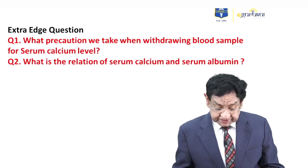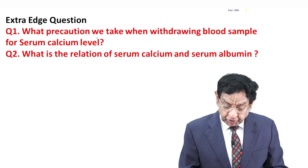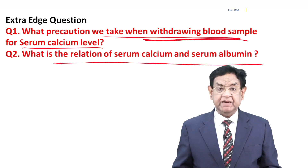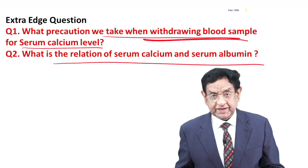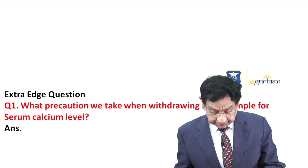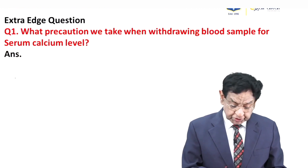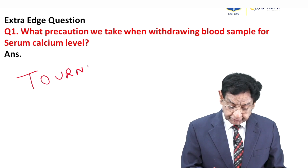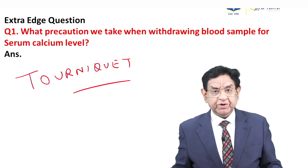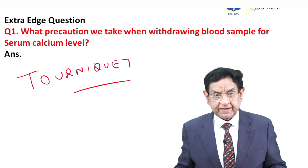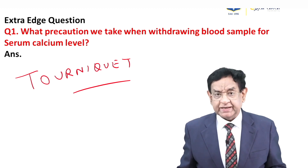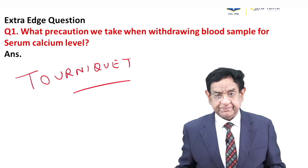Before proceeding further, there are certain questions. Question one: what precaution do we take when withdrawing a blood sample for serum calcium level? Regarding this first question — we do not use a tourniquet. Normally when taking a blood sample we tie a tourniquet to facilitate blood withdrawal, but when taking blood for serum calcium, do not use a tourniquet because it can falsely raise the calcium level. That is why repeated testing is needed to confirm the serum calcium level.